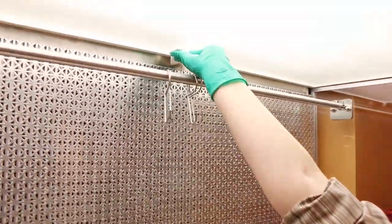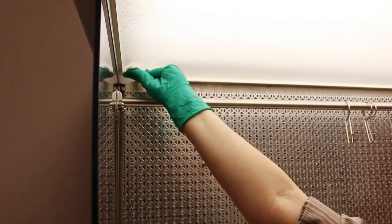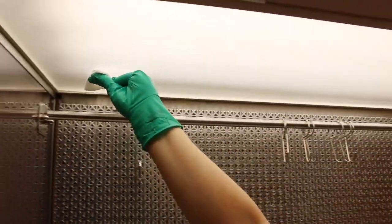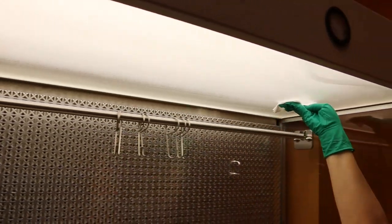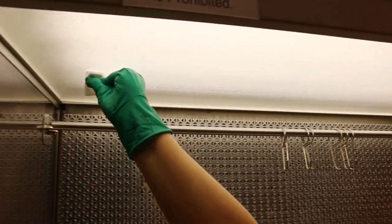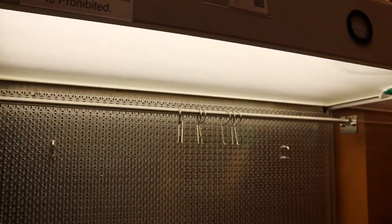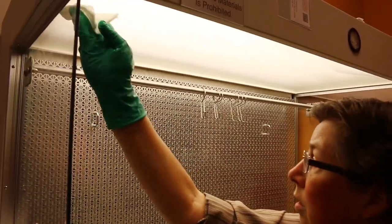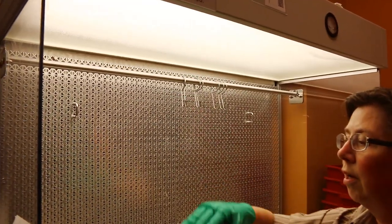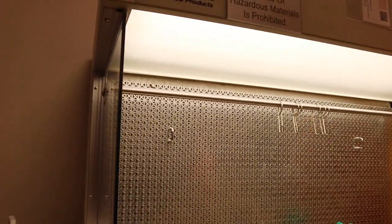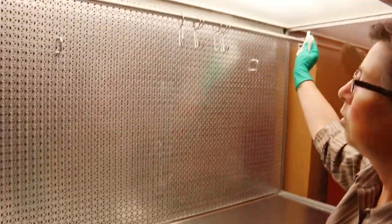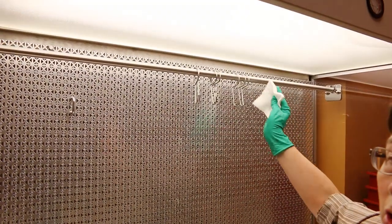Clean the ceiling from the back to the front with overlapping strokes. Once you come to the outside of the hood, that set of wipes is considered dirty.